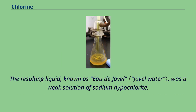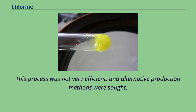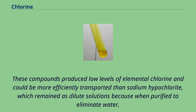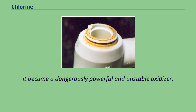The resulting liquid, known as Eau de Javel, was a weak solution of sodium hypochlorite. This process was not very efficient, and alternative production methods were sought. Scottish chemist and industrialist Charles Tennant first produced a solution of calcium hypochlorite, then solid calcium hypochlorite. These compounds produced lower levels of elemental chlorine and could be more efficiently transported than sodium hypochlorite, which remained as dilute solutions because when purified to eliminate water, it became a dangerously powerful and unstable oxidizer.